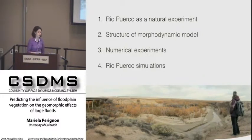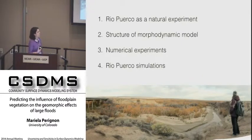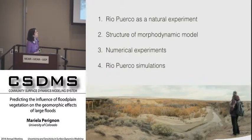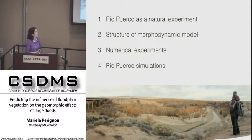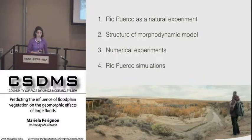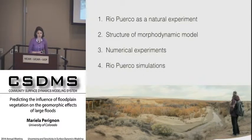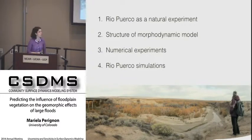Our goal is to develop a model that can predict the effects of a flash flood on a sand-bedded river with a vegetated floodplain at the scale of whole reaches. For that, we have chosen a natural experiment on the Rio Puerco in New Mexico. I'm going to show you some data we have from that site, then give you the structure of our numerical model, run through some numerical experiments that indicate what level of complexity we might need, and then show you some simulations of what a flood looks like in our model on the Rio Puerco.